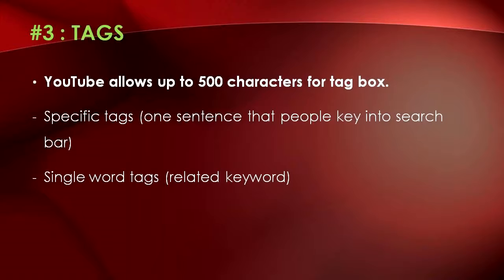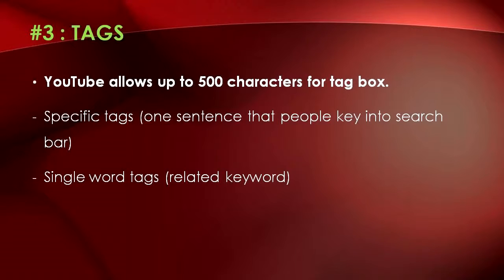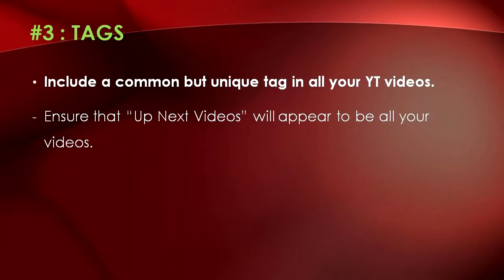Moving on to the third strategy: utilize tags attached to your video. YouTube generously allows up to 500 characters for the tag box, so fully utilize it on every video, just the same as your video description. The more you use, the higher chance it'll hit the jackpot. There are two types of tags: specific tags, which are phrases people key into the search bar, and single word tags, which are related keywords to people's search query. Including common but unique tags across all your YouTube videos ensures that the 'up next' videos will all be your own videos.